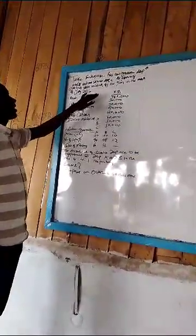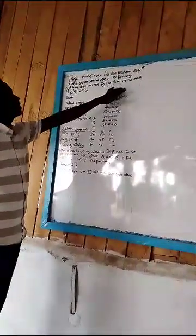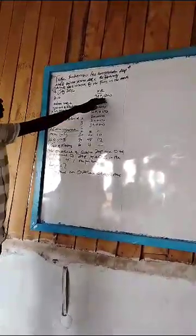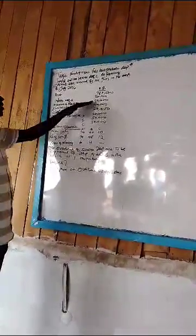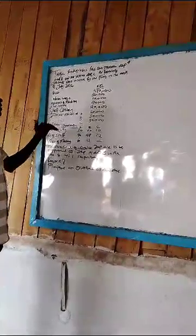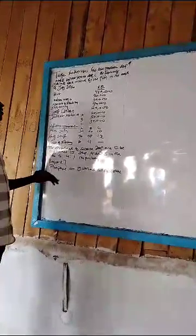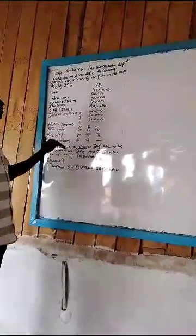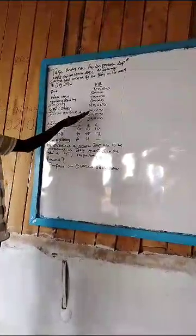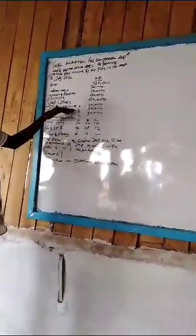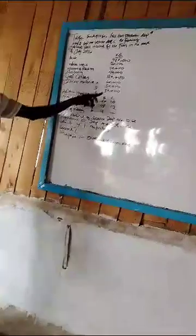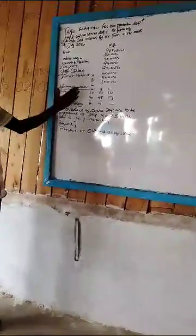The following overheads were incurred by the firm in the month of July 2016: rent $180,000, indirect wages $360,000, insurance of machinery $90,000, electricity $40,000. Indirect material for department A is $60,000, B is $6,000, and C is $3,000.